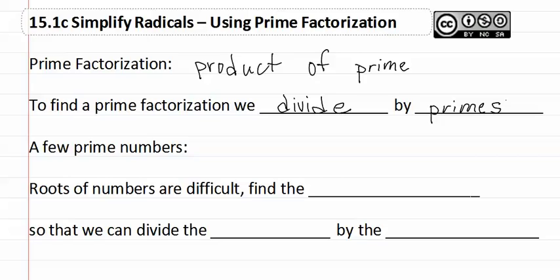As a reminder, the first few prime numbers are 2, 3, 5, 7, 11, 13, 17 and 19.